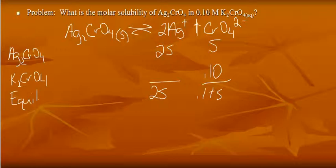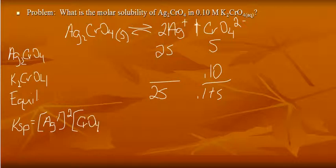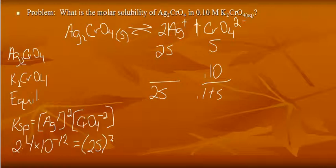I want to calculate the solubility, I want to calculate S. Well, I know Ksp is equal to the concentration of silver ions squared times chromate. And we know the Ksp value is 2.4 times 10 to the negative 12th. So 2.4 times 10 to the negative 12th is equal to silver, which is 2S squared, times chromate, which is 0.1 plus S.